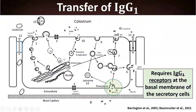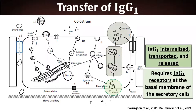For this process to occur, IgG must bind to receptors on the basolateral membrane of secretory cells — receptor expression is governed by hormonal changes discussed shortly. After binding, IgGs are internalized, transported across the cell, and released into the lumen. This mechanism is not fully understood and won't be covered completely here.